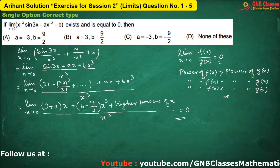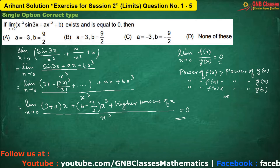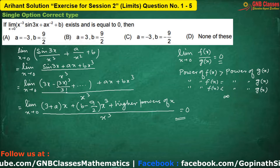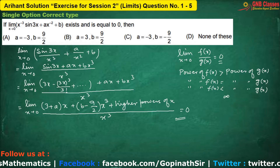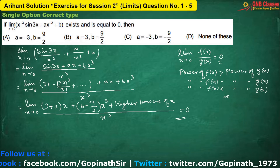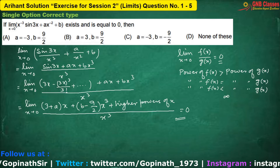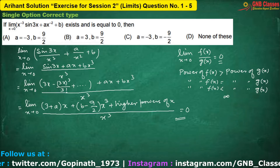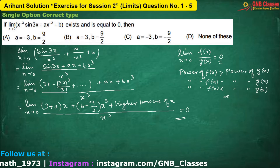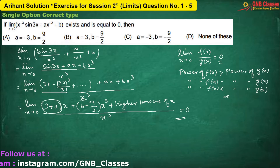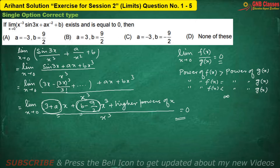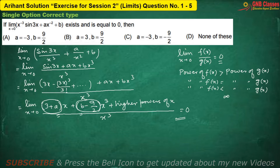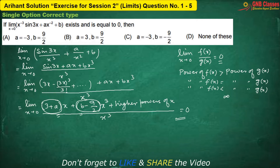Since the value of this limit is given to be zero, therefore the power of f(x), that is the power of the numerator, in this case should be higher than the power of the denominator. The power of denominator is three. So the numerator power should be more than three. For that, this part and this part has to be equals to zero. Because if these two parts exist, then the power of numerator will be either equals to the power of the denominator, or less than the power of denominator. In both cases, you will never get your answer as zero.